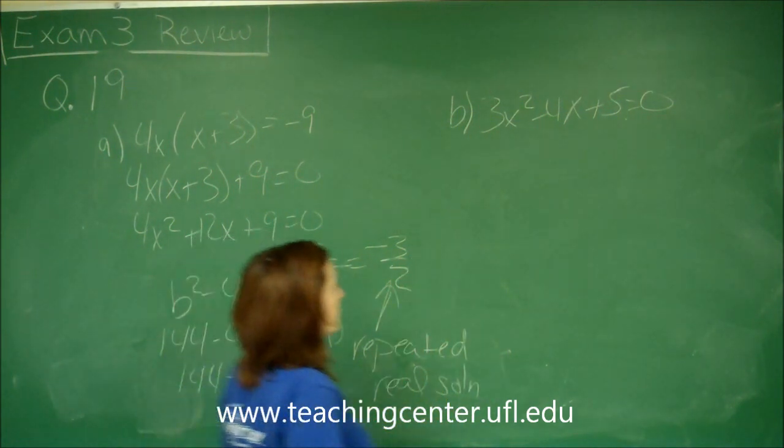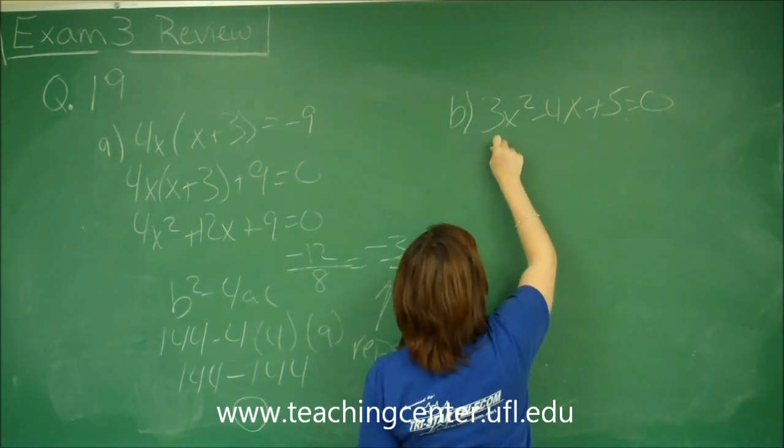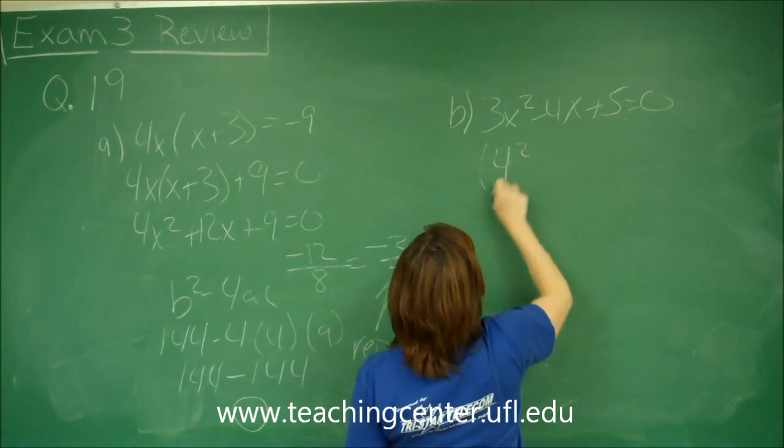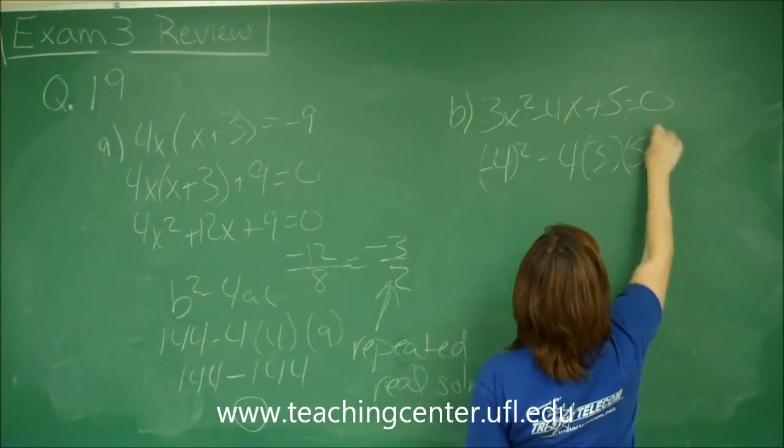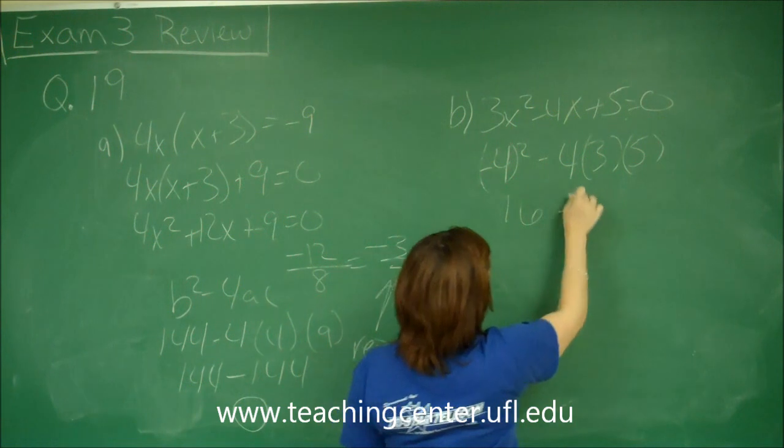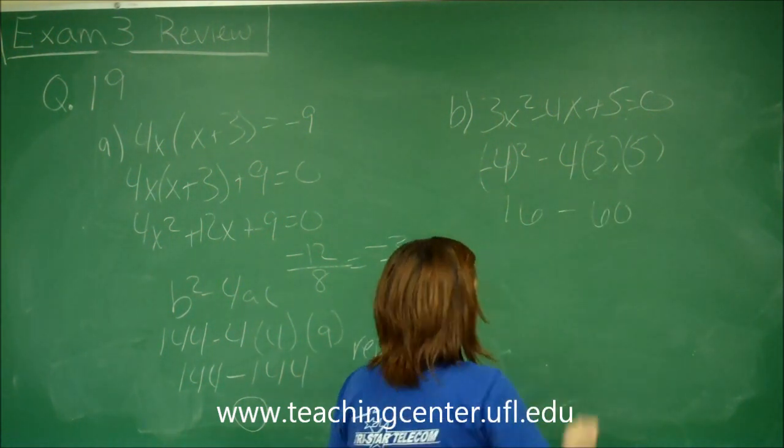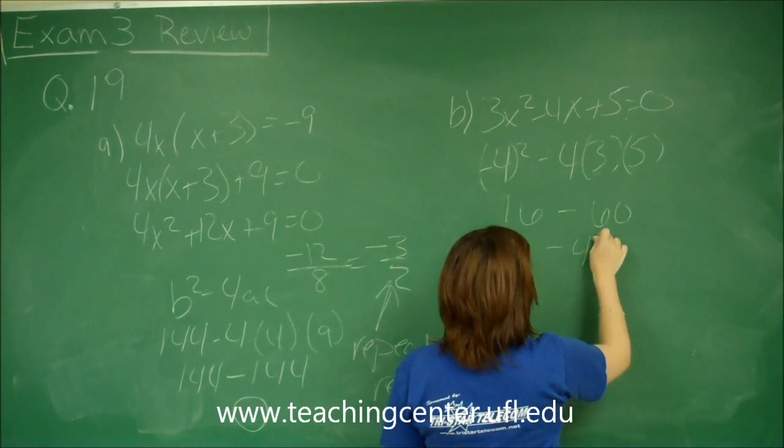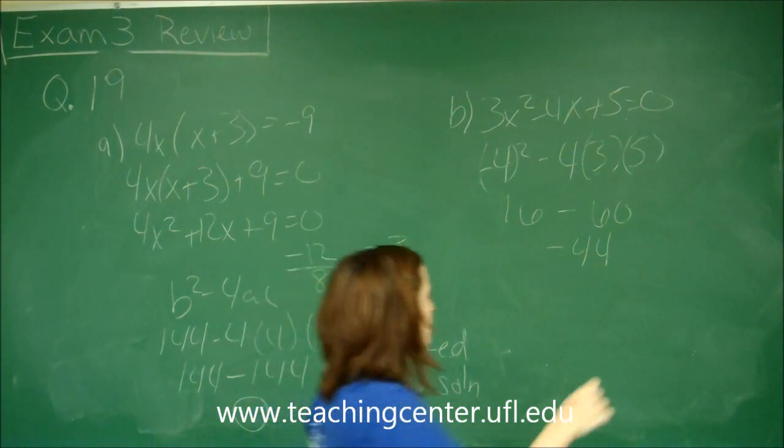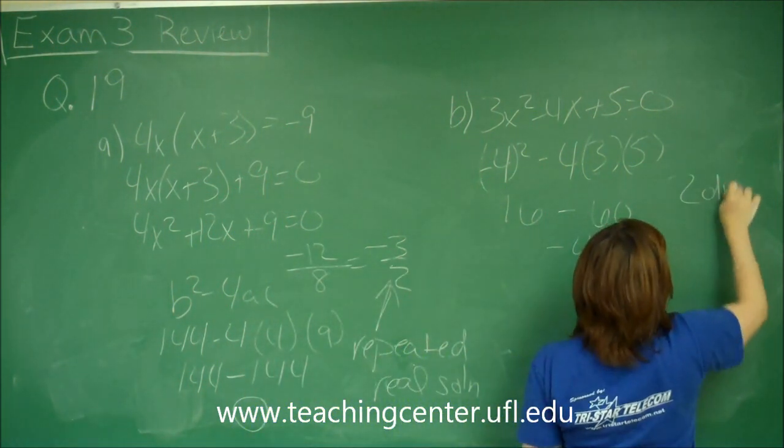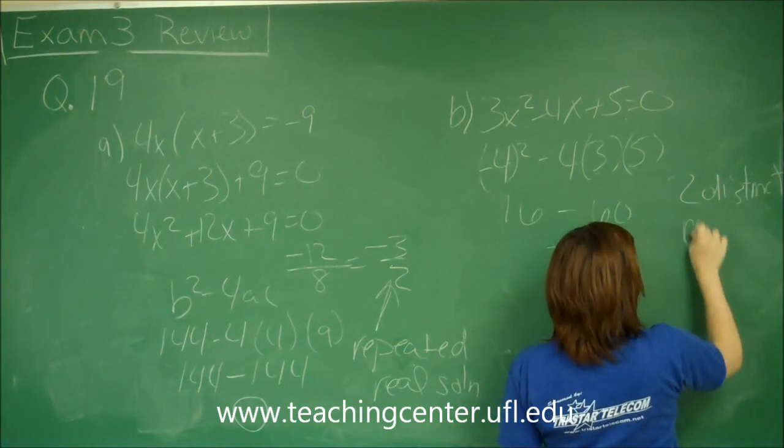Here problem number b. Again we're going to do our discriminant. So that's b squared minus 4 times a times c. So that gives me 16 minus 12 times 5 which is 60. So this is a negative value. And so this gives me a negative 44. And so what this means is that I'm going to have two distinct complex solutions.